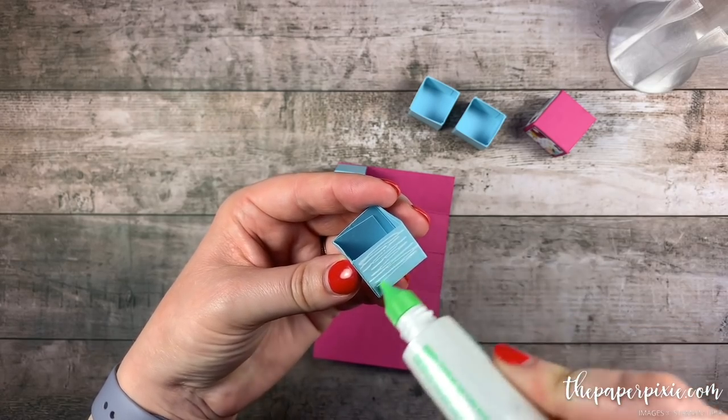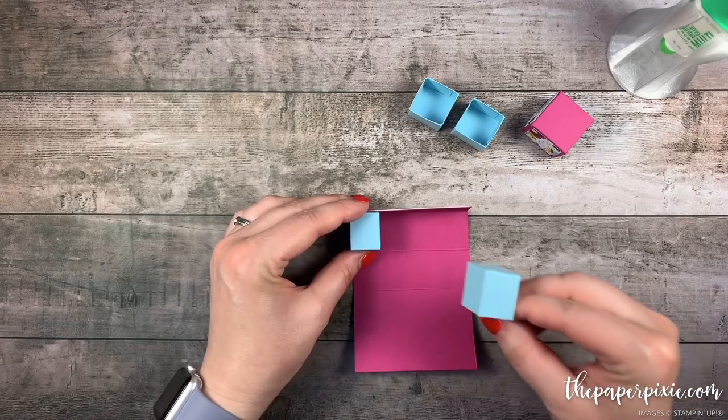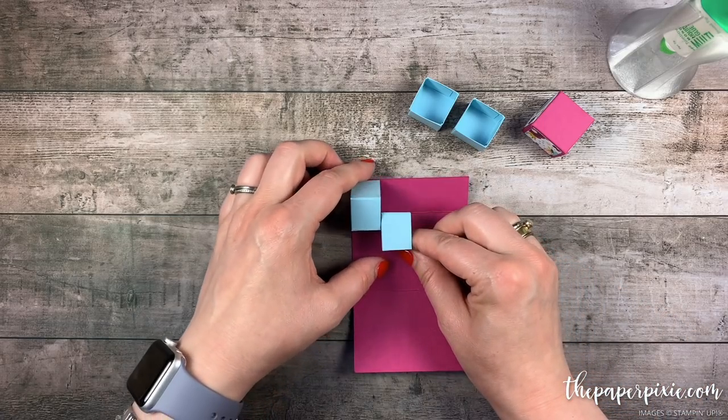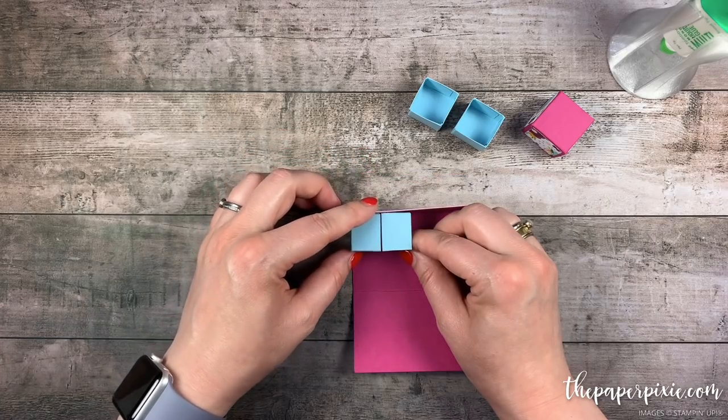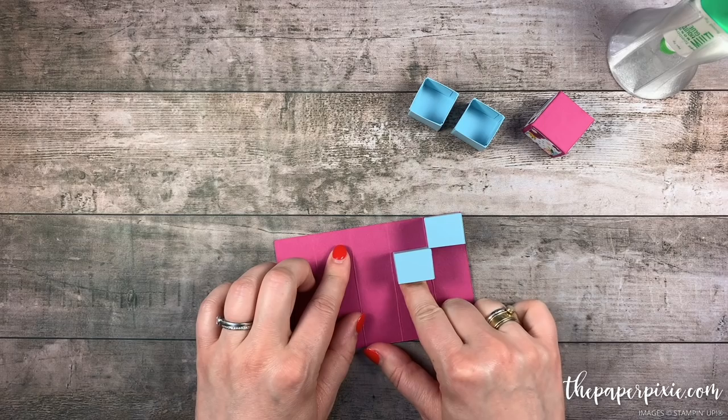All right so that one's ready to go so we'll move on to the next box again applying glue on the back side and then I'm going to fold up this first box to get this one lined up where we want it. Just making sure that this is going to clear the next box and then I'm going to come in and make sure that that's centered between the score lines.